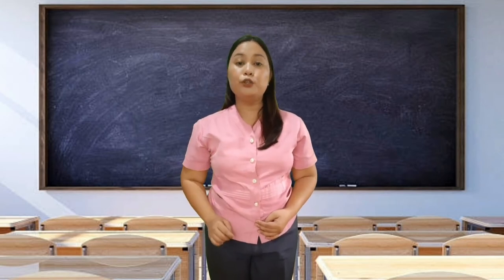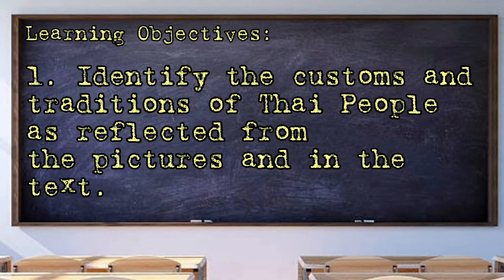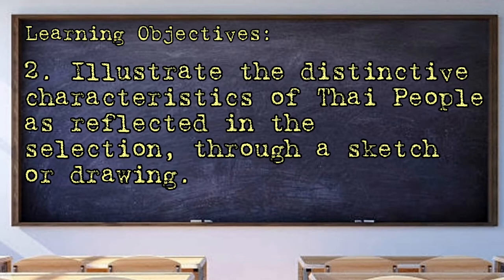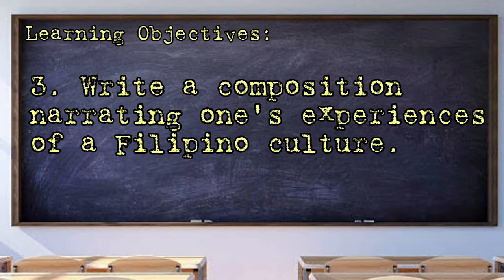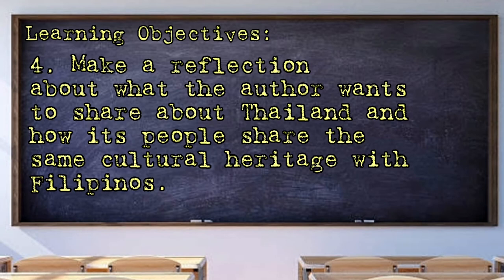Before we go to our lesson proper, let us first know what our goals are for this lesson. Goal number one: Identify the customs and traditions of Thai people as reflected from the pictures and in the text. Goal number two: Illustrate the distinctive characteristics of Thai people as reflected in the selection through a sketch or drawing. Goal number three: Write a composition narrating one's experiences of the Filipino culture. And the last goal: Make a reflection about what the author wants to share about Thailand and how its people share the same cultural heritage with Filipinos.